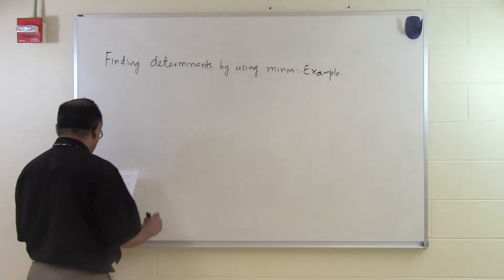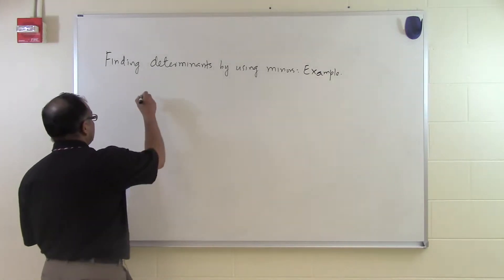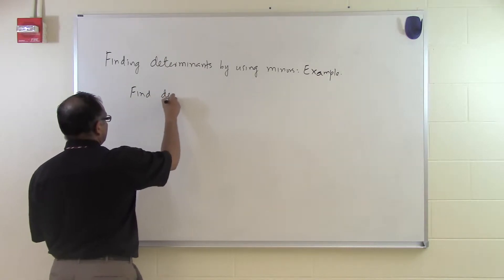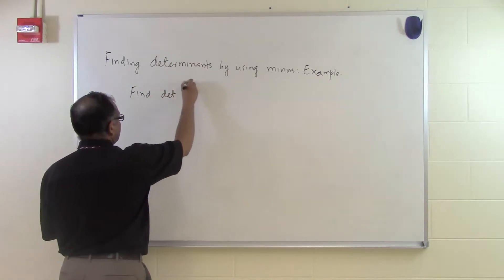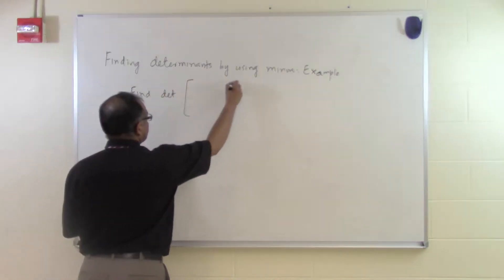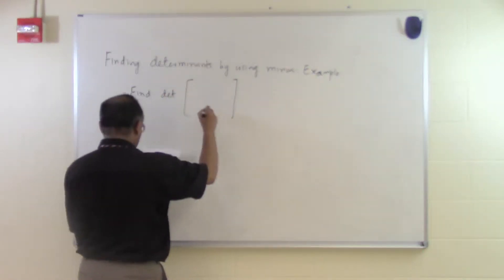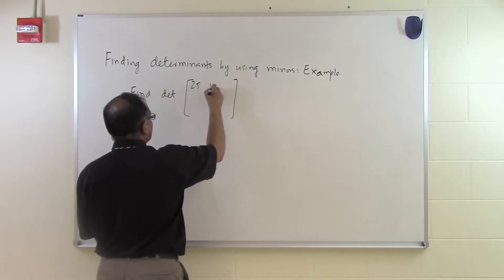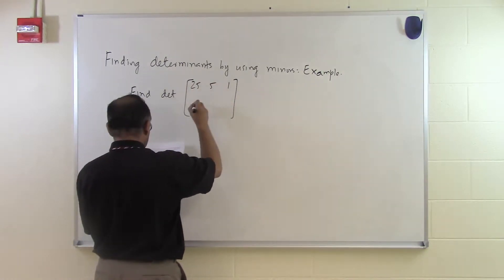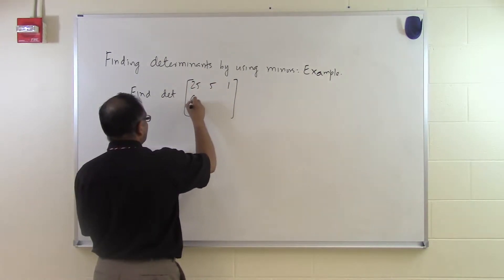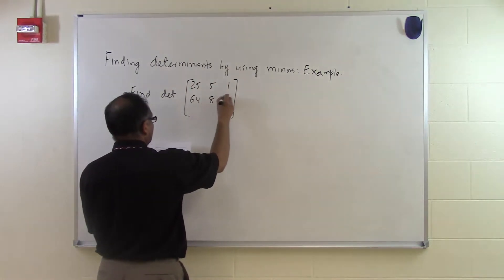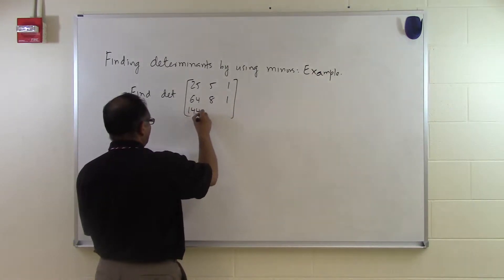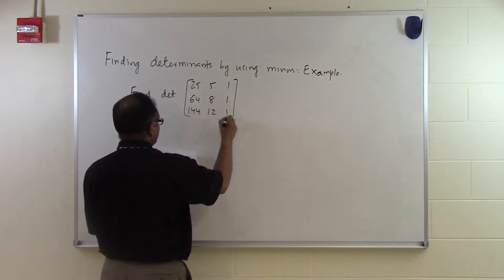Suppose somebody says find the determinant of this matrix: 25, 5, 1, 64, 8, 1, 144, 12, 1.